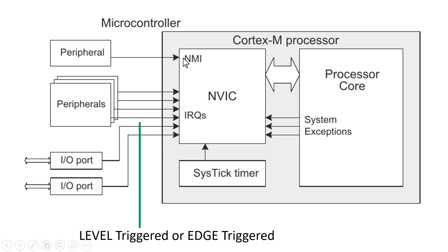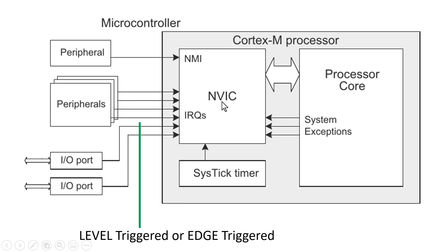A processor has multiple input lines as interrupt signals. In this figure I have shown two types of interrupts: one is NMI — non-maskable interrupt — and IRQ interrupt request lines, through which various peripherals can take the attention of the processor. As the name indicates, when a peripheral sends an interrupt on any of the IRQ lines, that peripheral is seeking immediate attention of the processor.